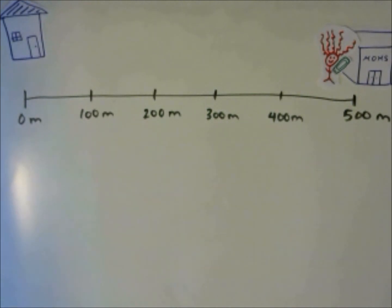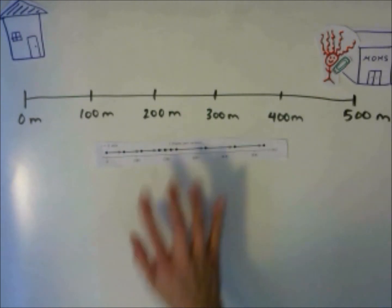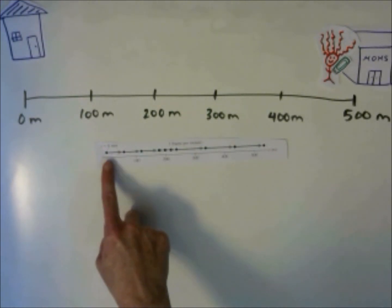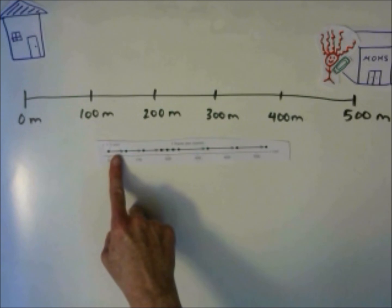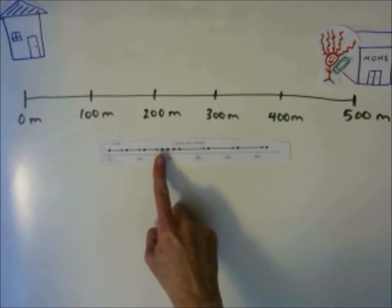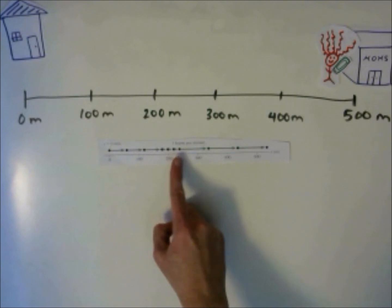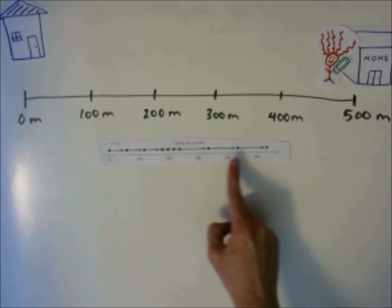We can see this motion on a motion diagram. Here we have where she starts at 0 meters. She is traveling at a constant velocity until she reaches about 170 meters. She slows down, and then she speeds up again.